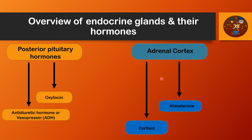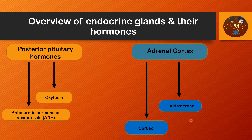Next come the hormones of the adrenal cortex glands — cortisol and aldosterone. Cortisol has multiple metabolic functions controlling the metabolism of proteins, carbohydrates, and fats. Aldosterone reduces sodium excretion by the kidney and increases potassium excretion, thereby increasing sodium in the body while decreasing potassium. So aldosterone plays with two key minerals: sodium and potassium.